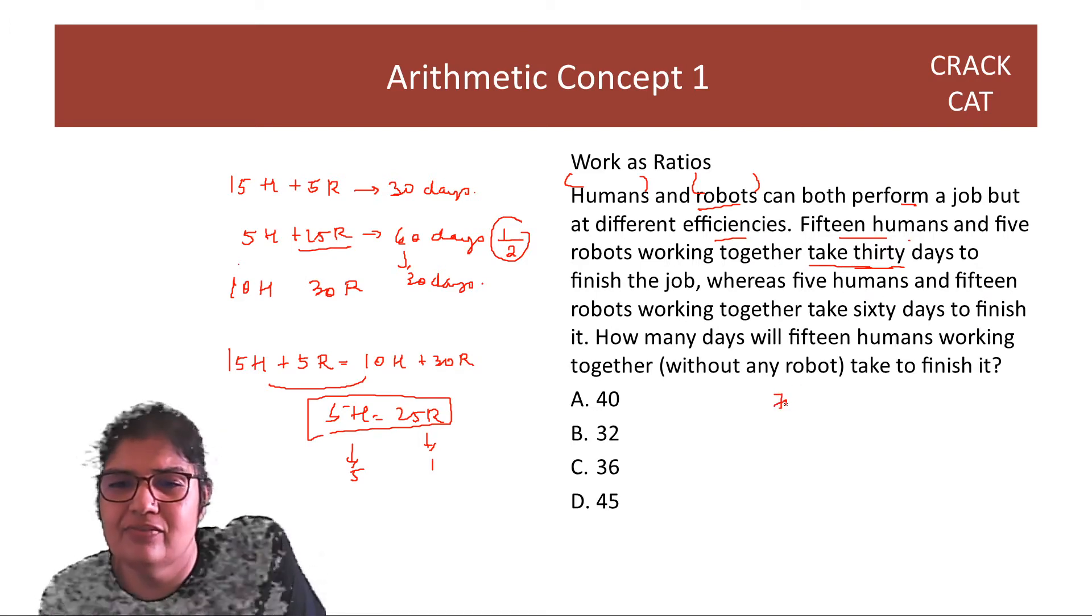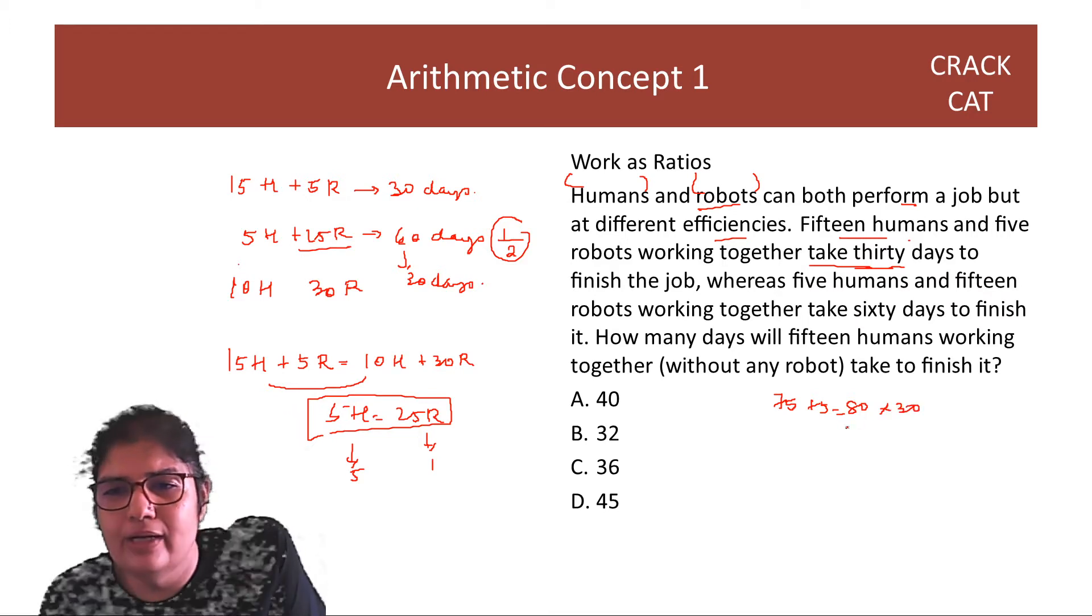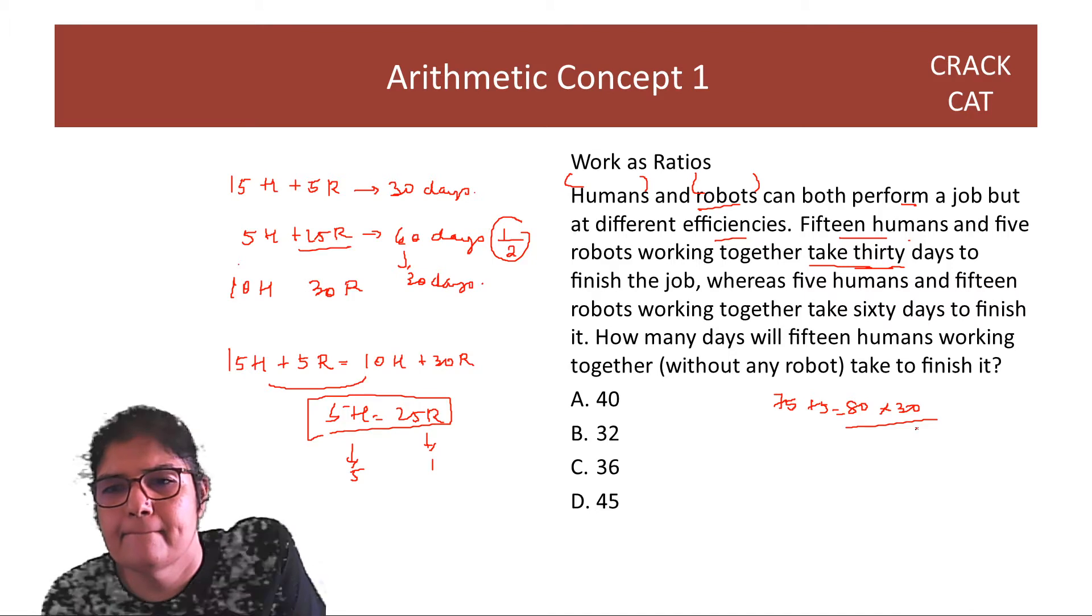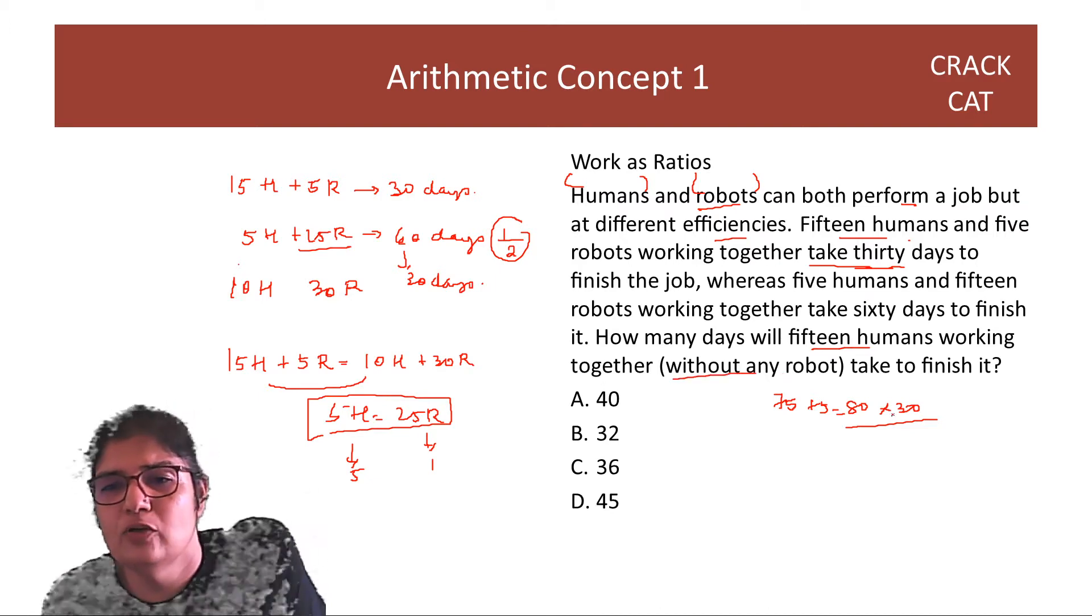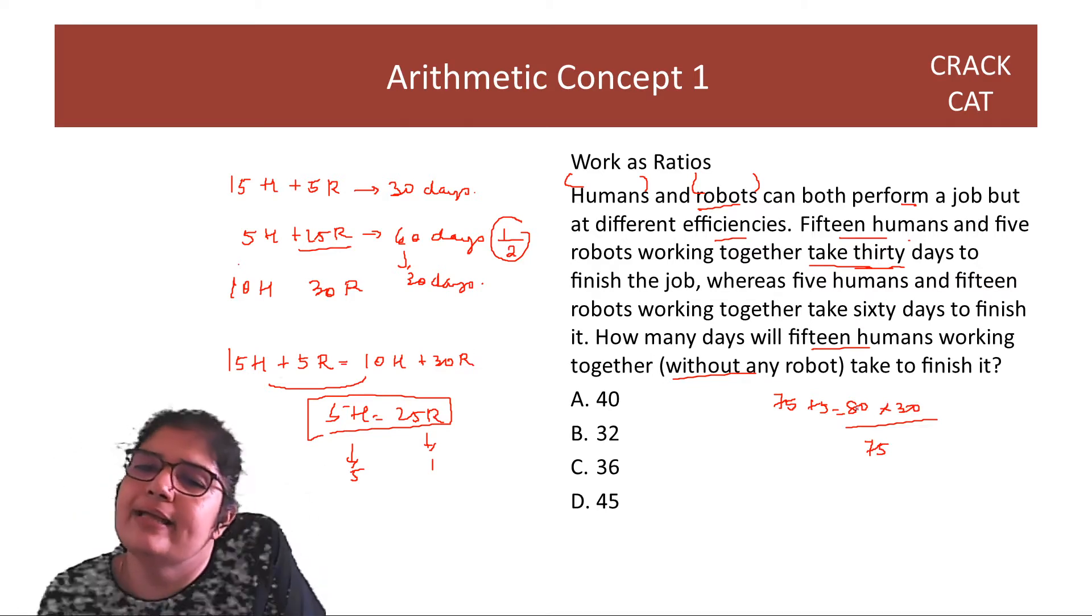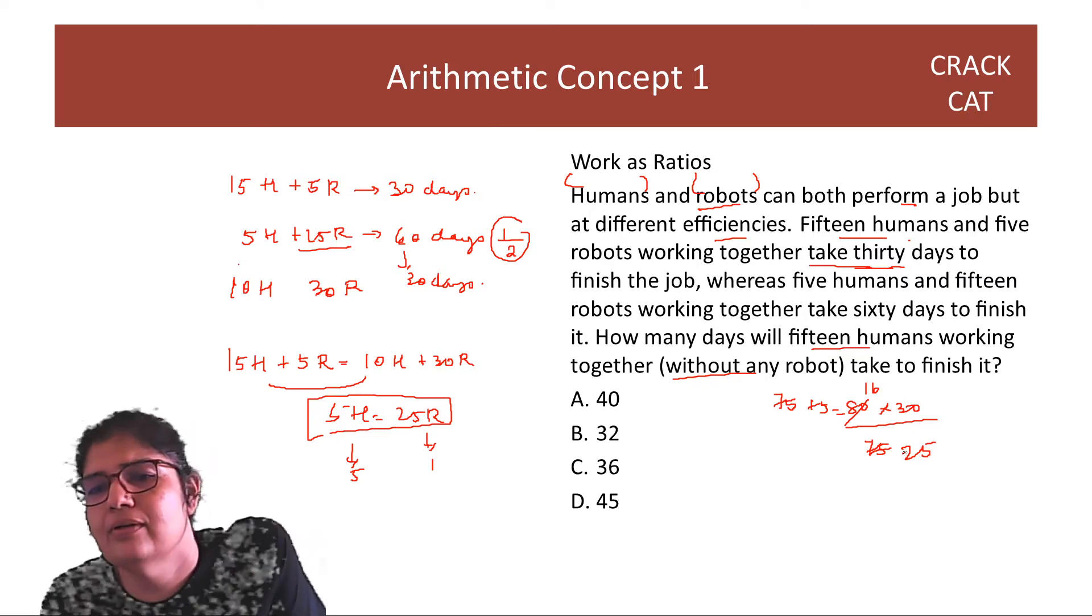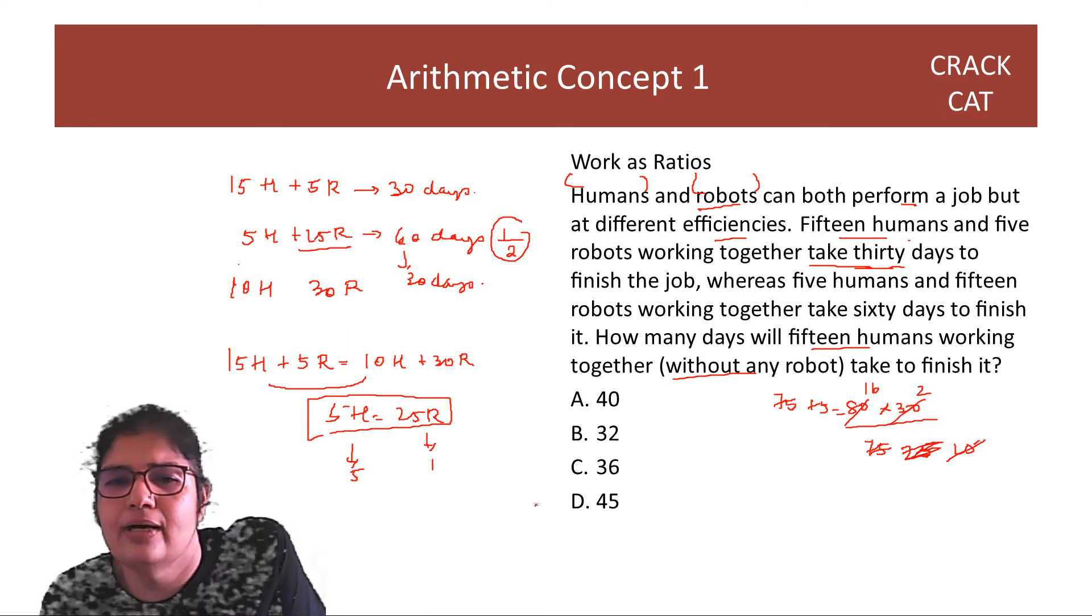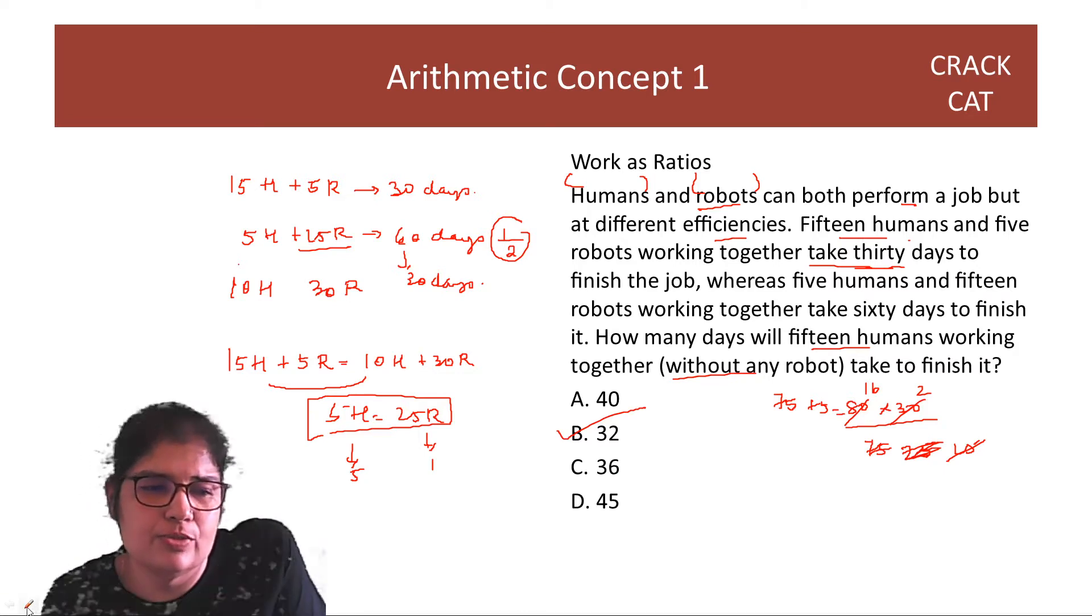So if this is your work, 30 days mein kaam ho raha hai. That's 15 humans. That's 75 units of work. Each human is 5 units. And 5 robots is 5 units. So 80 units in a day and 30 days. So the total work is 2400 units. Now, 15 humans working together without any robot. 15 humans are going to do 75 units of work. So if I just do some cancellations, this is 16 here and this is 15. And you have a 2 here. So answer is 32.